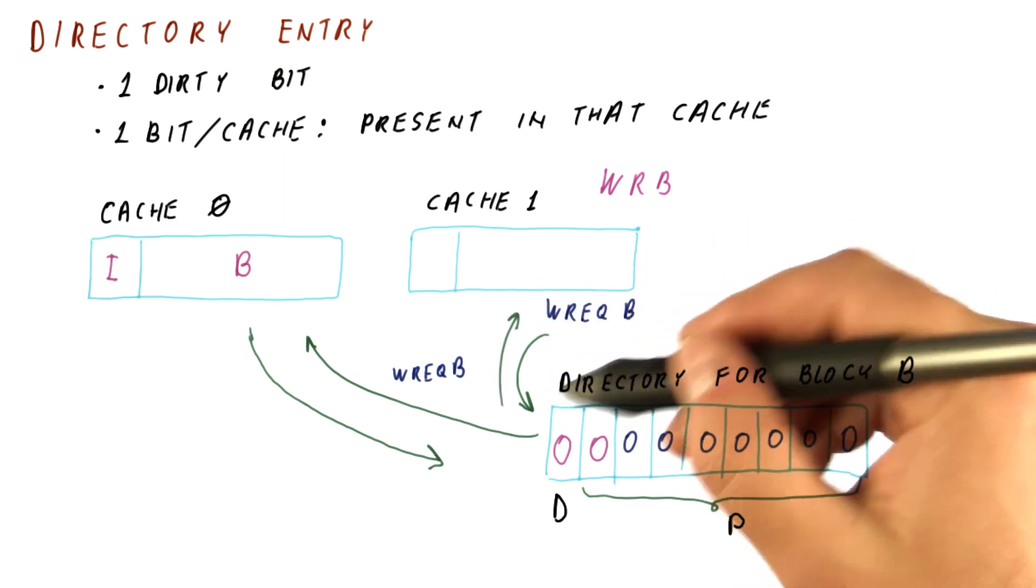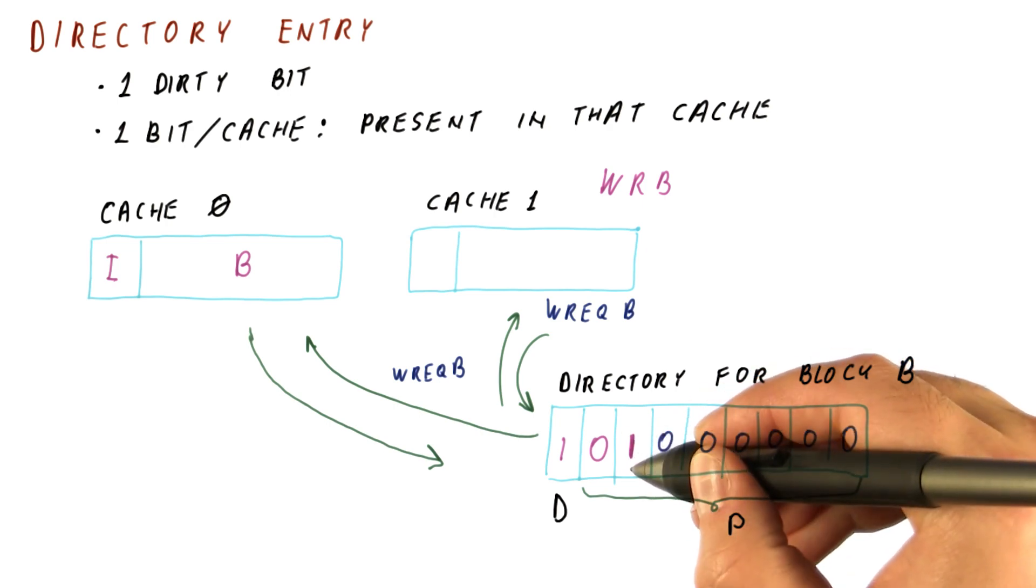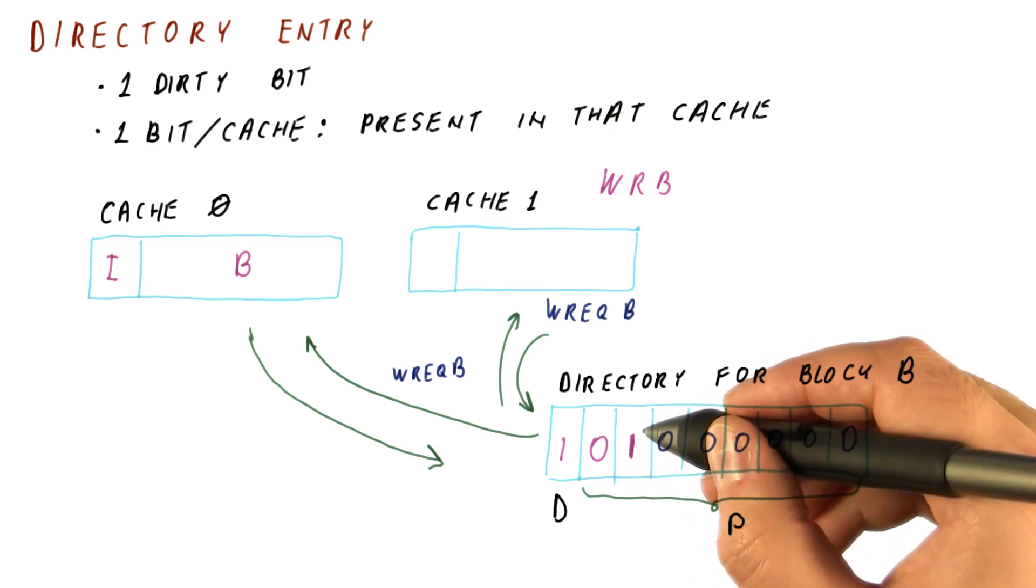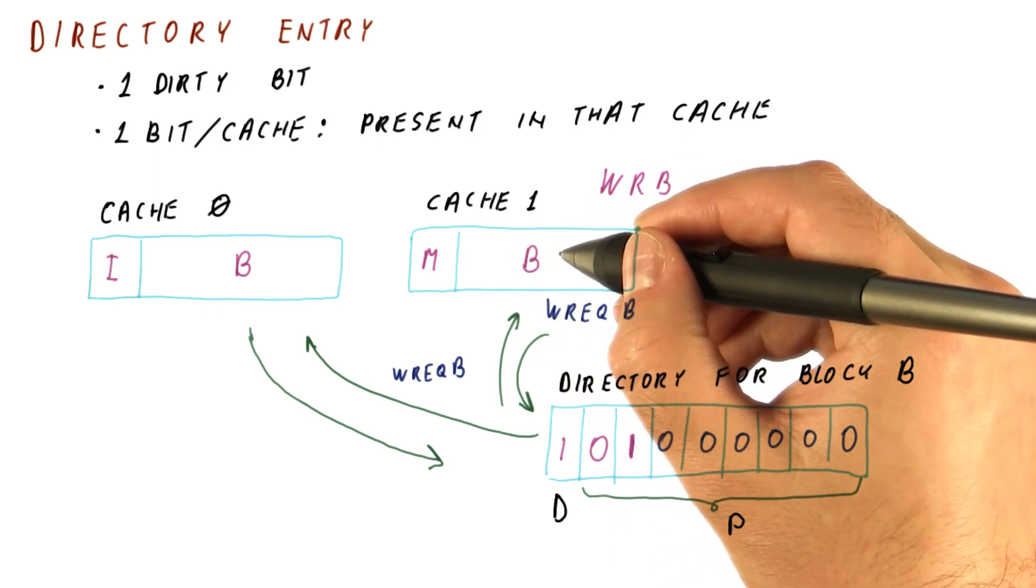And because we are acknowledging a write request, we again set the dirty bit. And now the presence vector gets a one for the bit that corresponds to cache one. And now we get to set M here and write to the B here.